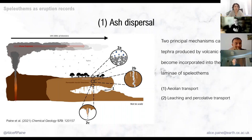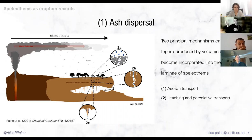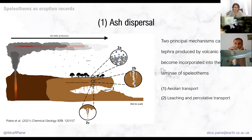There are two key mechanisms that could enable volcanic material to become incorporated into the growth of stalagmites. The first is aeolian transport — ash being blown directly into the cave, deposited on the tip of the stalagmite, and incorporated into the growth layers. The second mechanism is through leaching and percolative transport. Ash falls on the ground above the cave; key trace elements leach from the ash, becoming incorporated into the water that feeds through the limestone, into the drip aquifer feeding the stalagmite, resulting in very enriched drip water — producing really clear layers of trace element enrichment that manifest as distinct spikes.